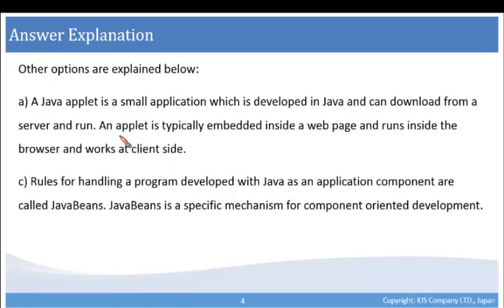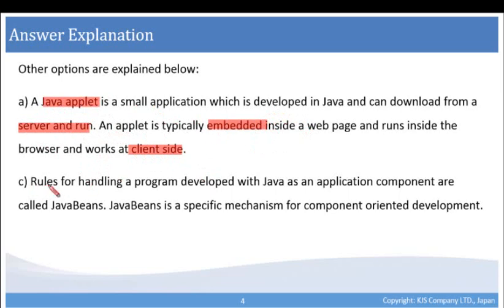Let's go through the other options and quickly explain what they are. A Java applet is a small application which is developed in Java and can be downloaded from a server and run. An applet is typically embedded inside a web page and runs inside the browser and works at client-side. c. Rules for handling programs developed with Java as an application component are called JavaBeans. JavaBeans is a specific mechanism for component-oriented development.